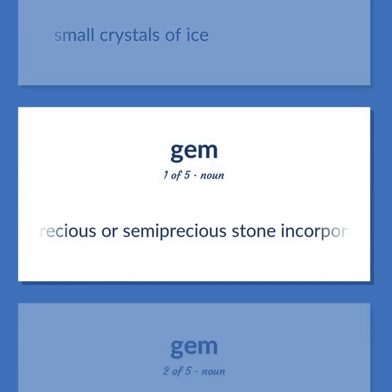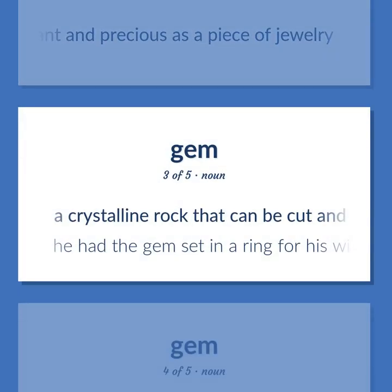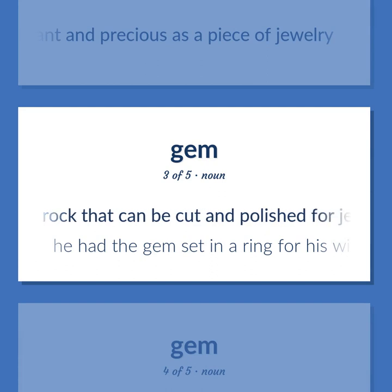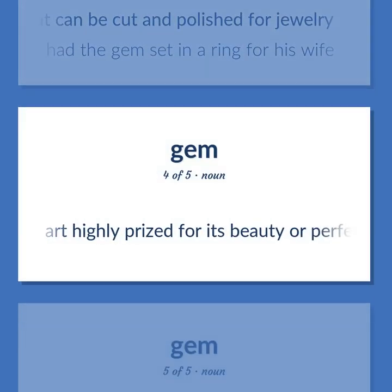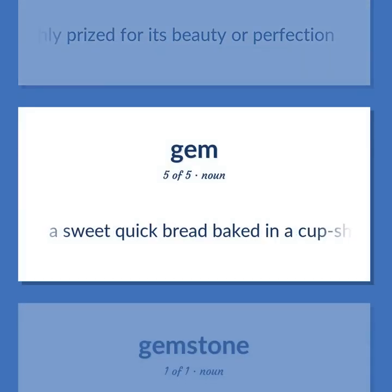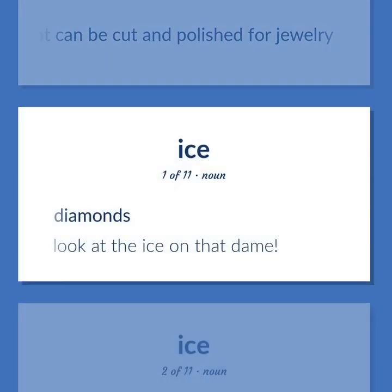A precious or semi-precious stone incorporated into a piece of jewelry. A person who is as brilliant and precious as a piece of jewelry. A crystalline rock that can be cut and polished for jewelry — he had the gem set in a ring for his wife. Art highly prized for its beauty or perfection. A sweet quick bread baked in a cup-shaped pan. Diamonds — look at the ice on that dame.